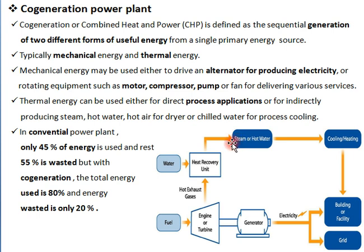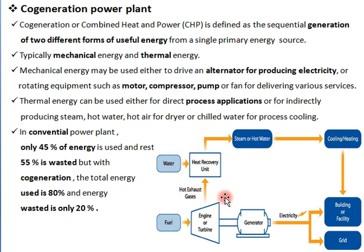The thermal energy produces steam used for direct process applications in industries like sugar mills, milk plants, textile mills, and paper mills where steam is part of the manufacturing process. For indirect processes, it provides hot water, hot air for dryers, or chilled water for cooling. From a single primary energy source, we can utilize more amount of energy.